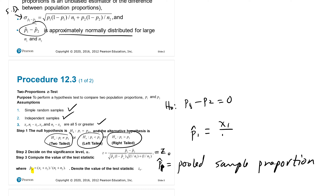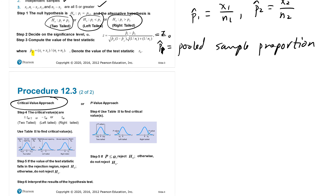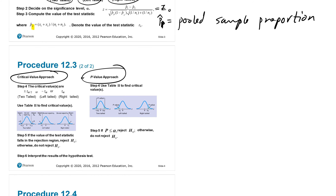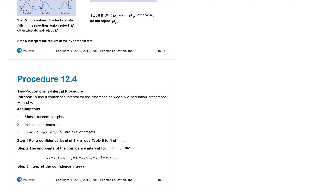To recall: p1-hat equals x1/n1 and p2-hat equals x2/n2. After finding z-sub-0 we can use either the classical critical value approach or the p-value approach, exactly as before. We use the z-table (Table 2) for this. We will also learn how to find the confidence interval, using formulas for the lower bound and upper bound of the difference of the two population proportions.